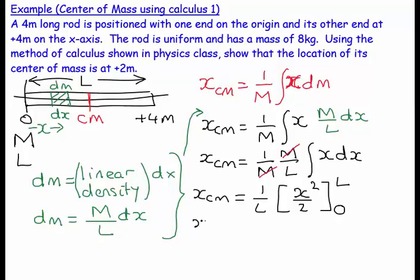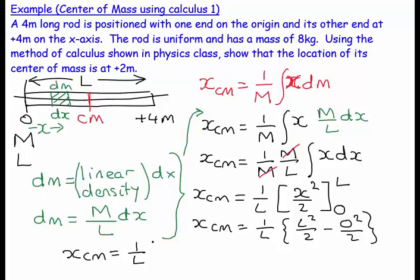So x center of mass is equal to 1 over L. That's going to be L squared over 2 minus 0 squared over 2. So x center of mass is equal to 1 over L times L squared over 2, which equals L over 2.